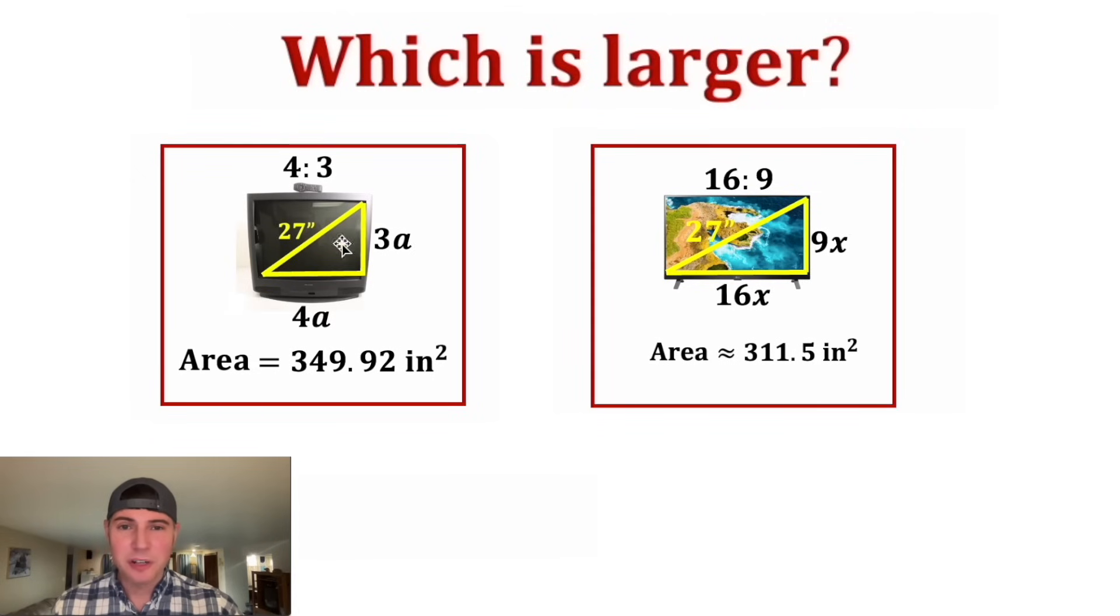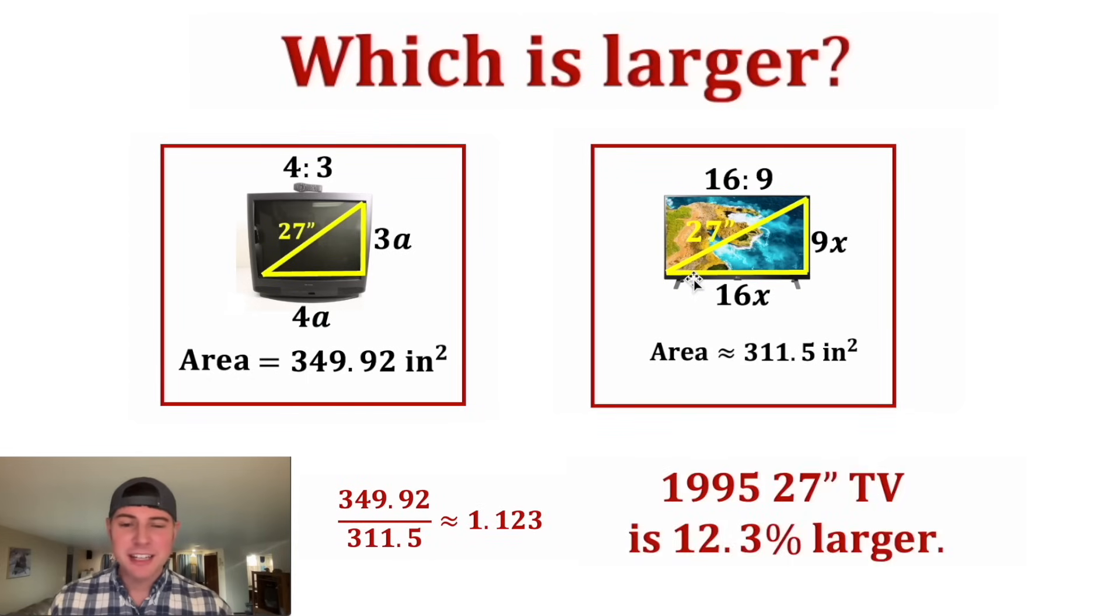So we can see that the 1995 27-inch television had a larger area. And if we divide this area by this area, we get approximately 1.123. So we can conclude that the 1995 27-inch TV is about 12.3% larger. How exciting.